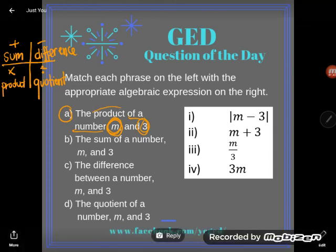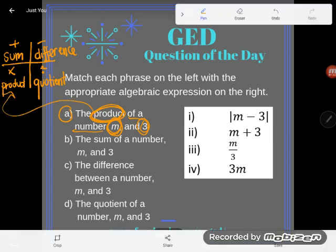So I'm asking you to add an unknown number, m and 3. Oh, no, I'm not. What am I asking you to do? Pay attention, Kate. Product, we said, was a multiplication problem.